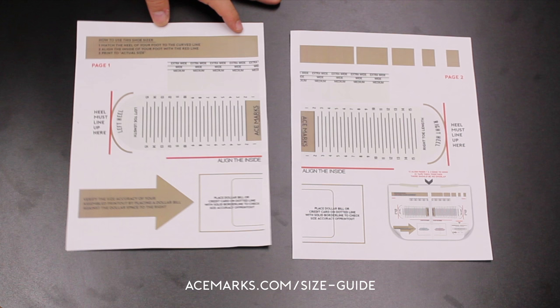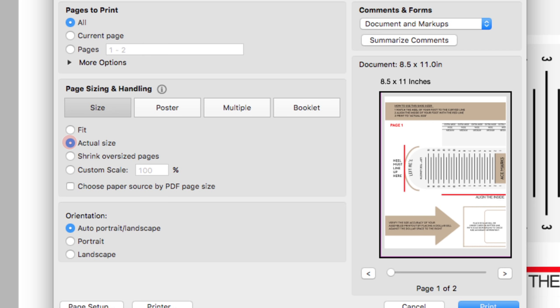The first thing you want to do is find the links on that page and print out the PDF. When you're printing out the PDF, make sure to check your printer settings and set them to actual size so that you get the correct proportions.